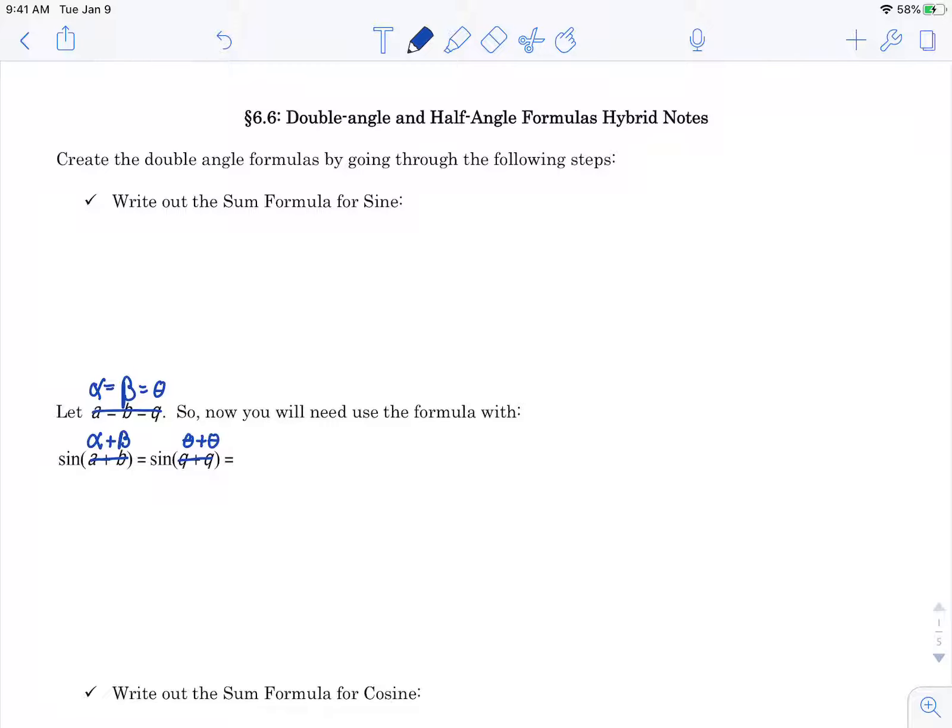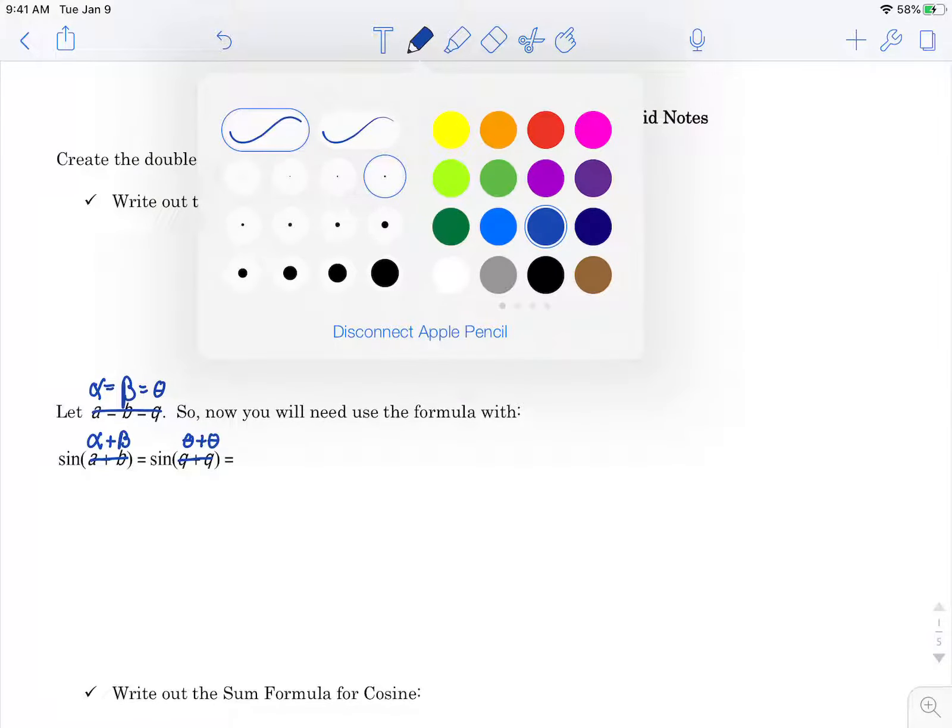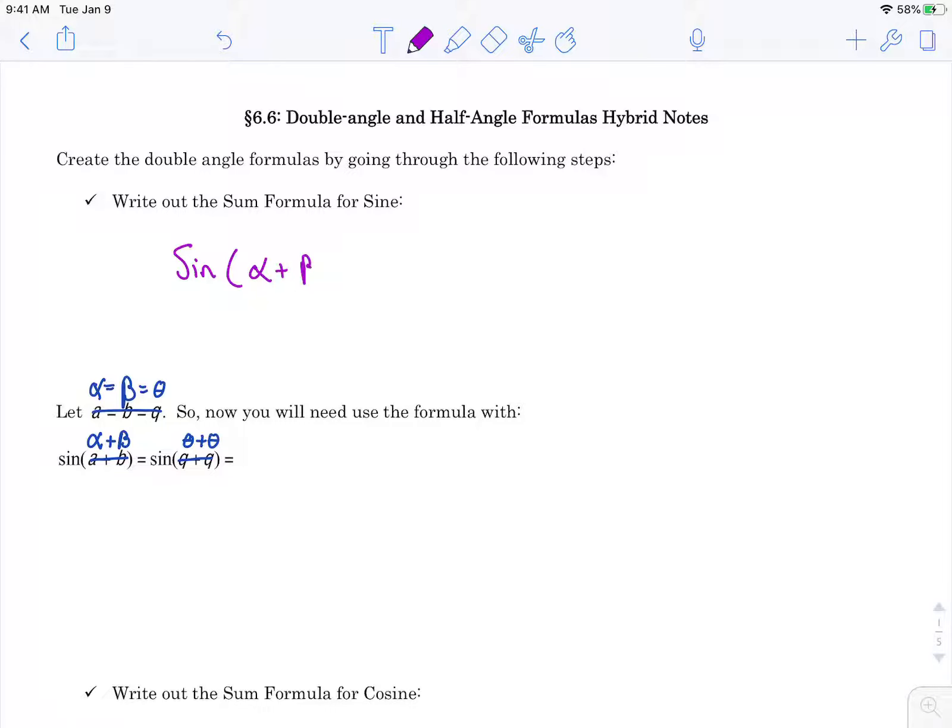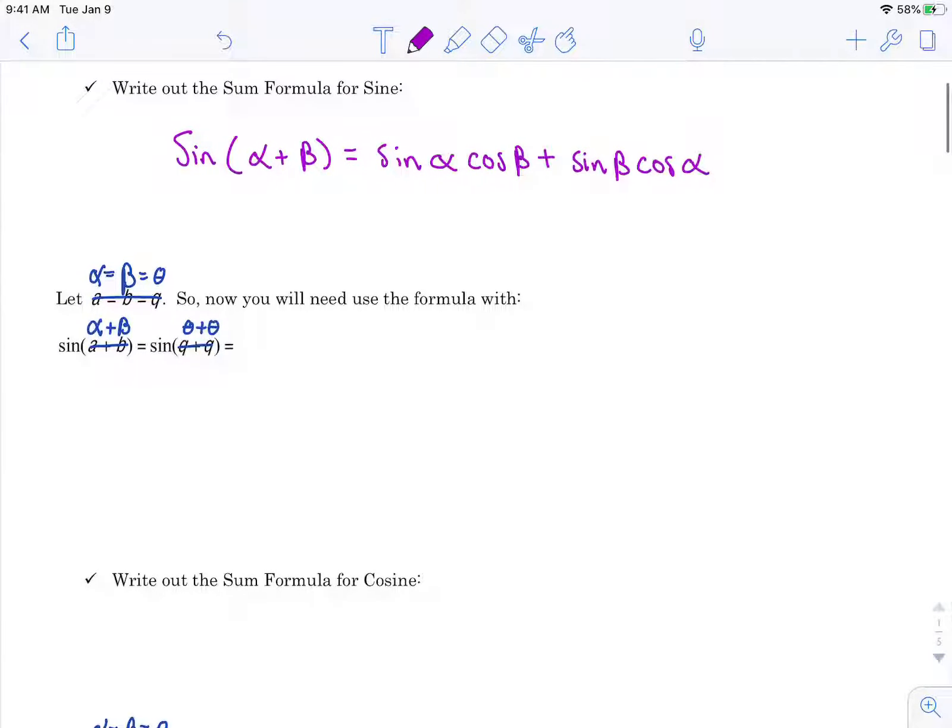We're going to write out the sum formula for sine, which we learned in the last section. That is sine of alpha plus beta, and again I'm just taking this from what we learned last section, that equals sine of alpha cosine of beta plus sine of beta times cosine of alpha. All right, now I'm going to take this formula and I'm going to claim that alpha and beta are the same angle.